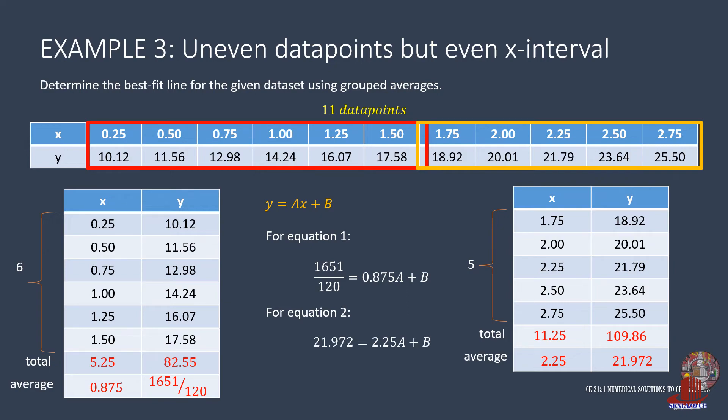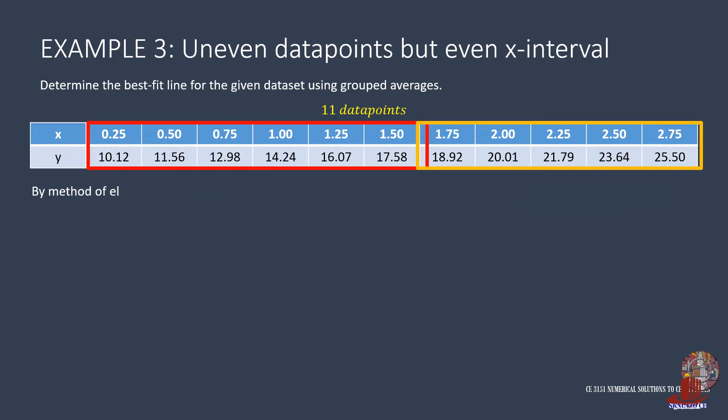We again eliminate B by subtracting the two equations where 21.972 minus 1651 over 120 gives 24641 over 3000. Then 2.25 minus 0.875 is 1.375A. A is then determined as 5.9736.